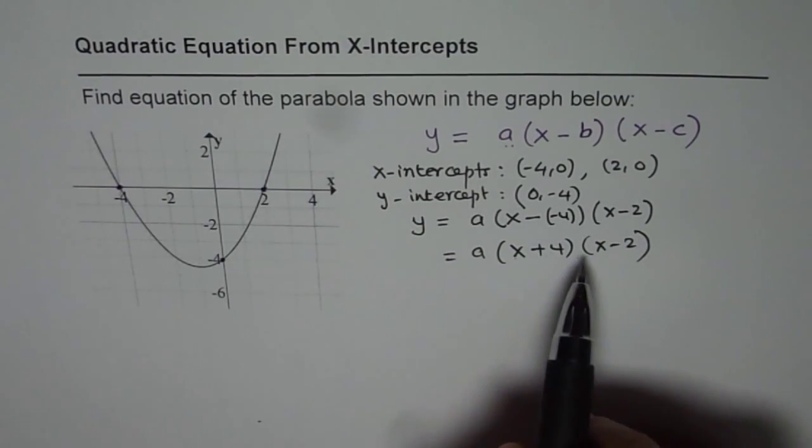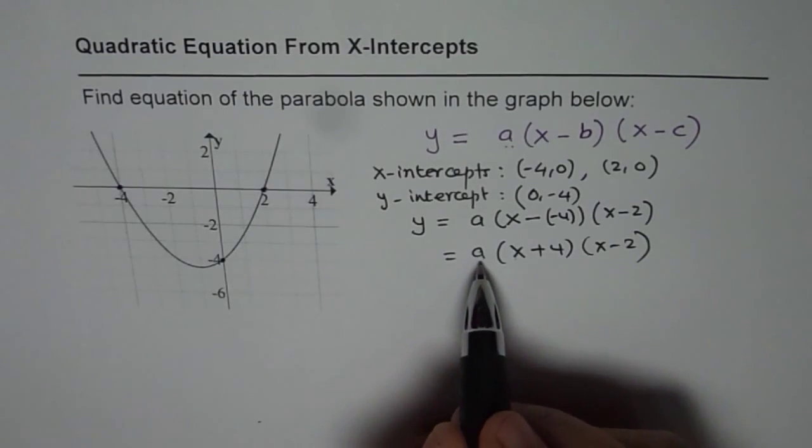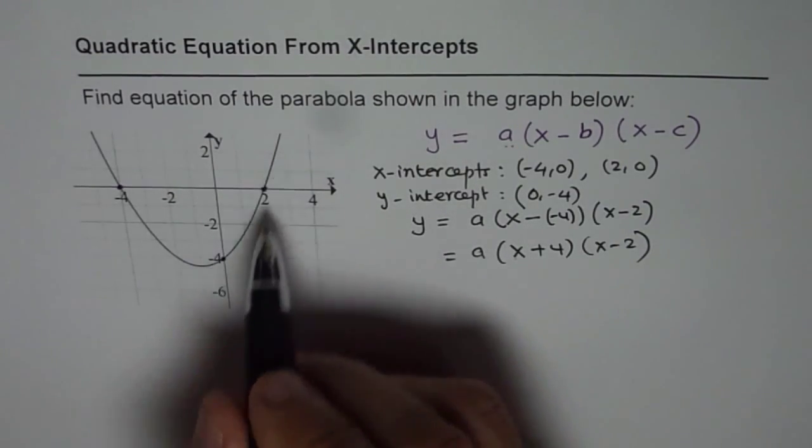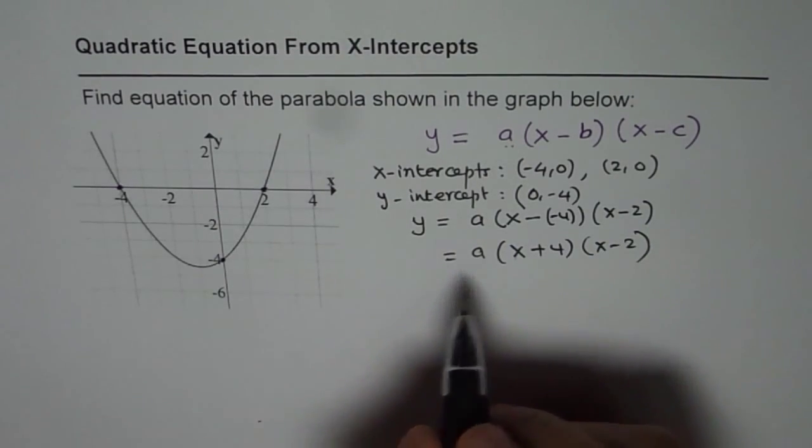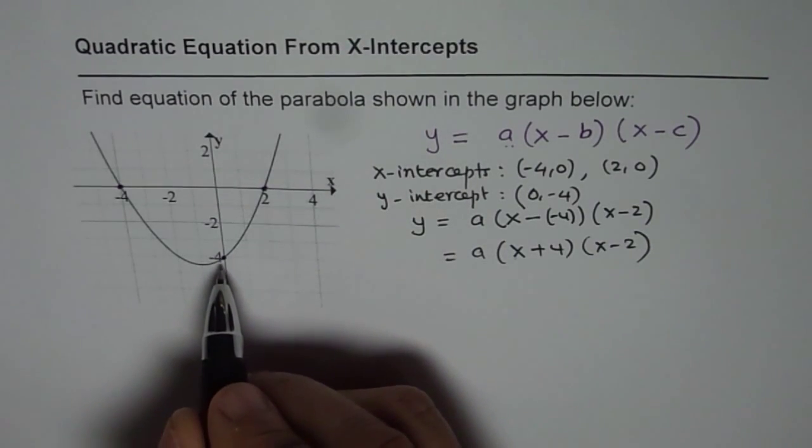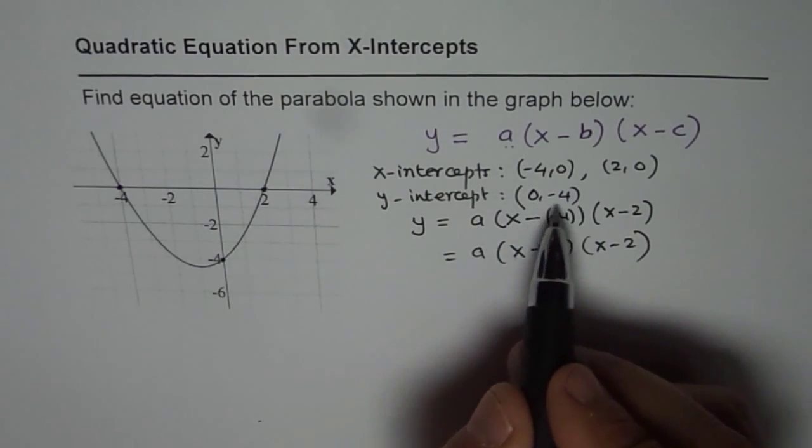So that is the correct equation using x-intercepts. Now to find specifically the equation for the given parabola we have to use some other point. Y-intercept is a very good point to take, which is 0, minus 4. X is 0, Y is minus 4.